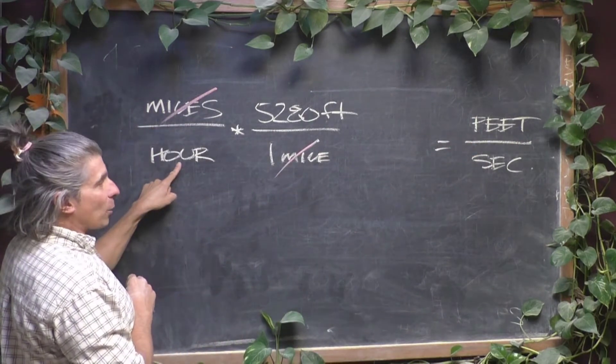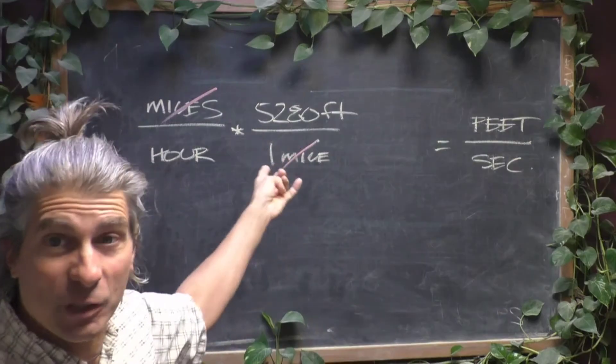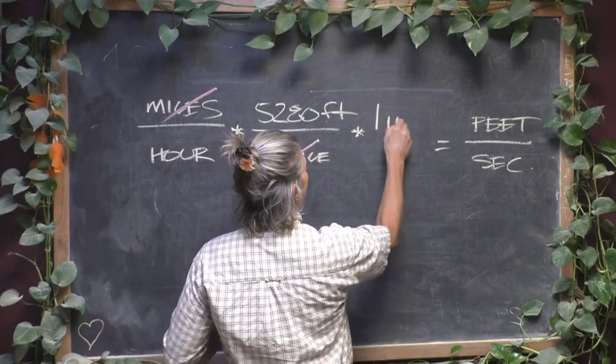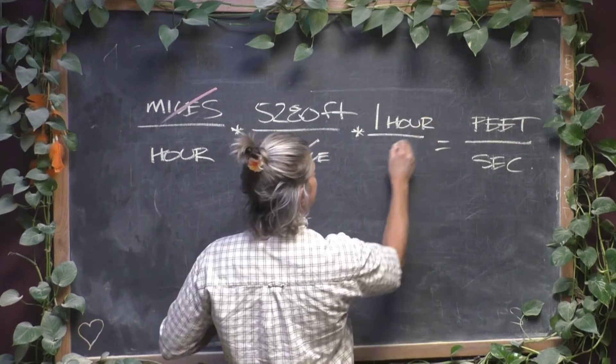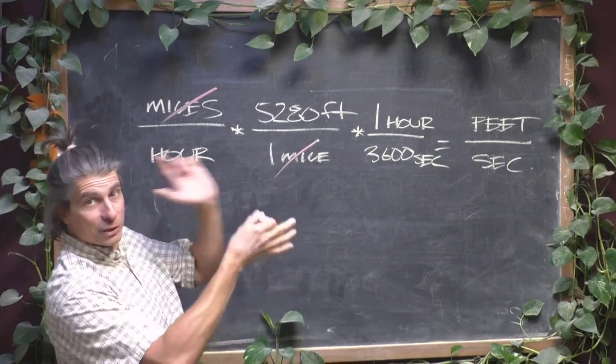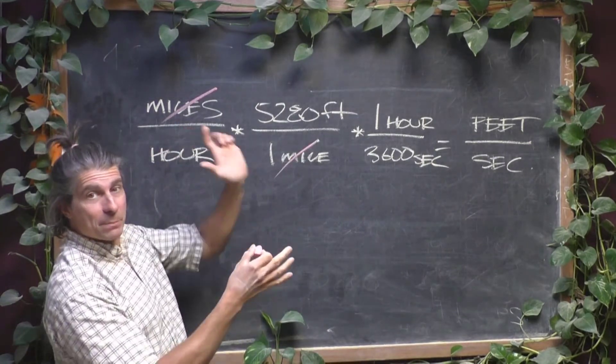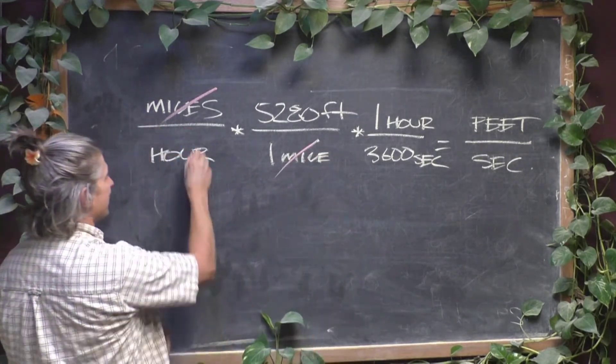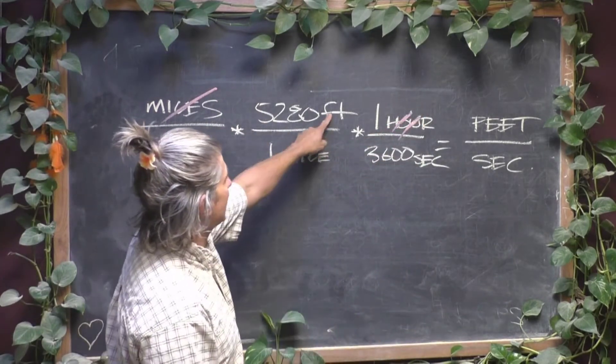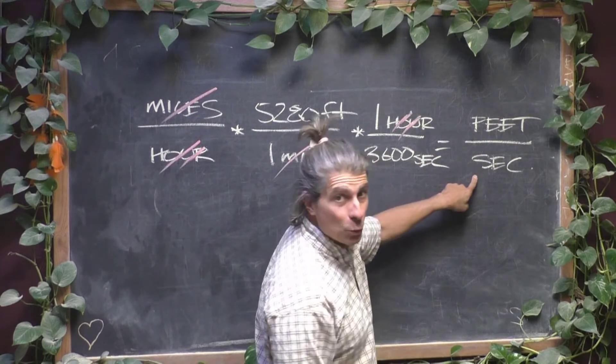We also have to change hours into seconds. To save space here, I'm just going to combine that all down into one hour is the same thing as 3,600 seconds. I mean, you can do it in two steps, hours to minutes, minutes to seconds, or you can just do it in one step like this. And then hours divides off and look at the unit you're left with. You're left with feet per second, which is what you want.